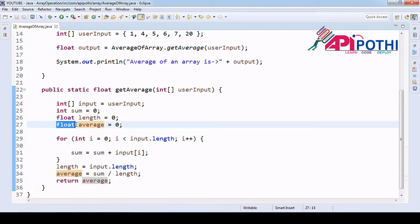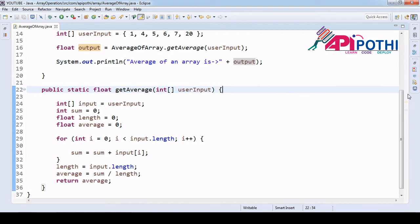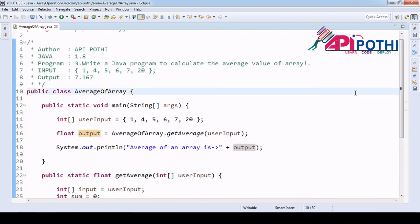Average is sometimes in decimal also, so to make sure of that we are storing into float. Since we are dividing by length, we want to get the actual value, so I'm storing this also into float. The output return is average which is float type, and we are saving it into the output and printing it. Thanks for watching this video.